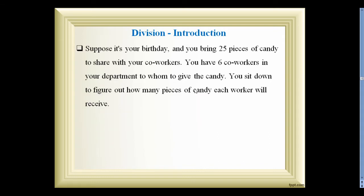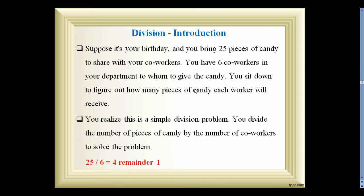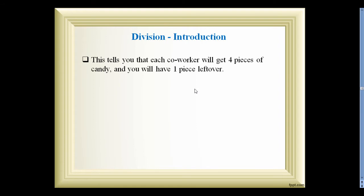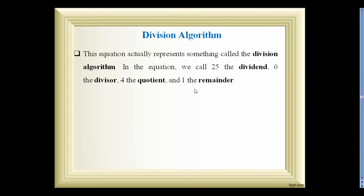For the division introduction, suppose it's your birthday and you bring 25 pieces of candy to your office to give to your co-workers. You have 6 co-workers in your department and you have to figure out how many pieces each worker will receive. You divide 25 by 6 and get 4, with a remainder of 1 candy. So this can be written as 25 = 6 × 4 + 1, which represents the division algorithm.